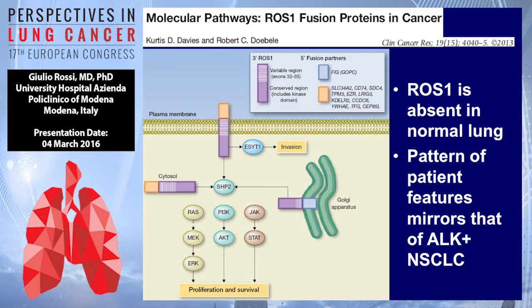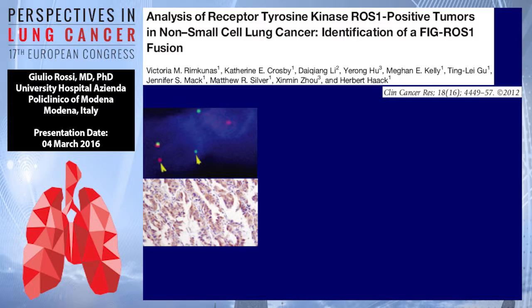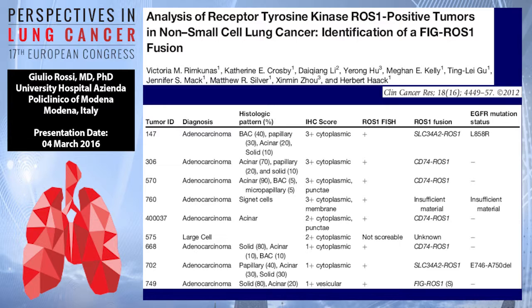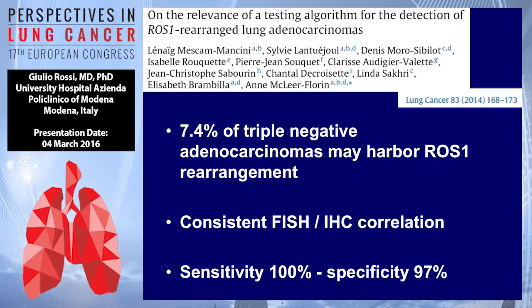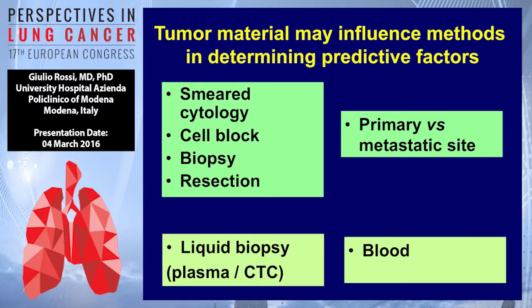It's the same for ROS1, which is very similar to ALK. But there is a problem with immunohistochemistry because sensitivity is not very good, and there is aberrant expression in hyperplastic pneumocytes or macrophages. In small biopsies it's very difficult to determine ROS1 positivity with immunohistochemistry. A recent example from the Grenoble group demonstrated good sensitivity and specificity comparing immunohistochemistry and FISH analysis for detecting ALK rearrangement in non-small cell lung cancer.